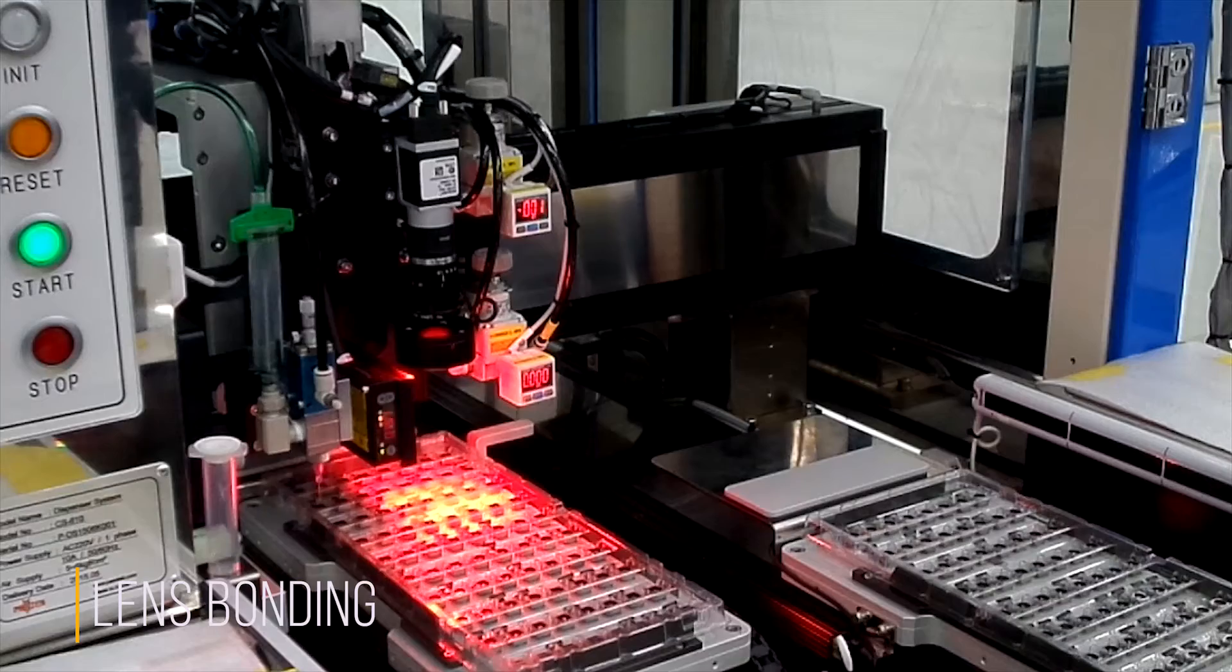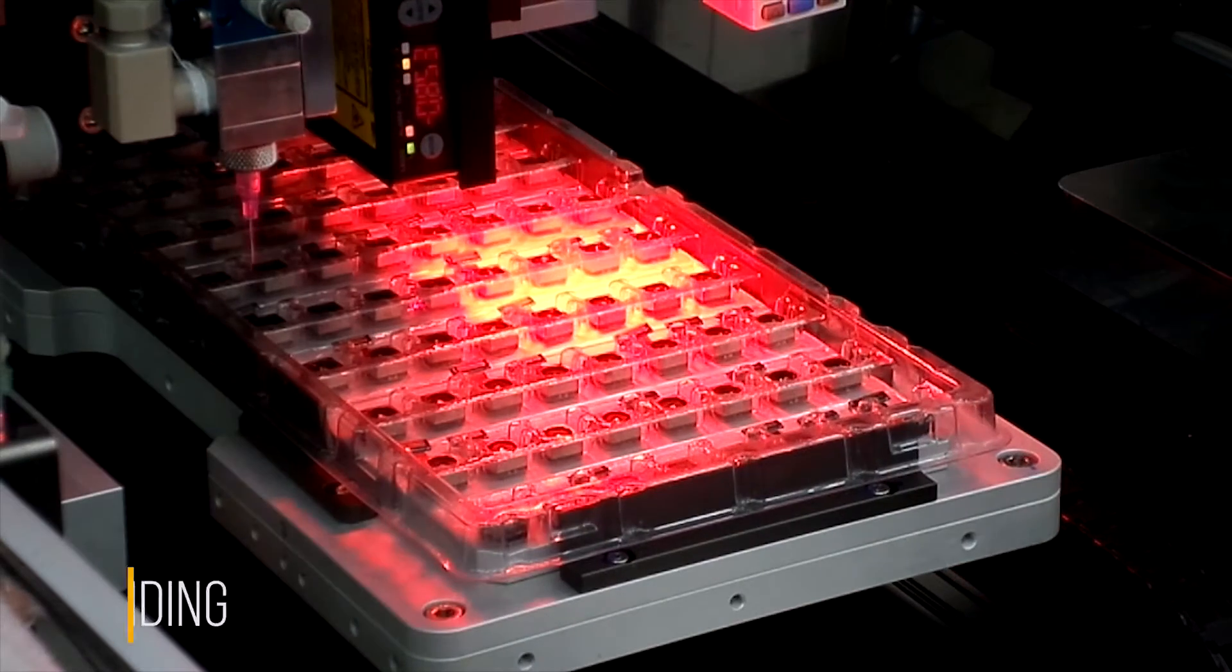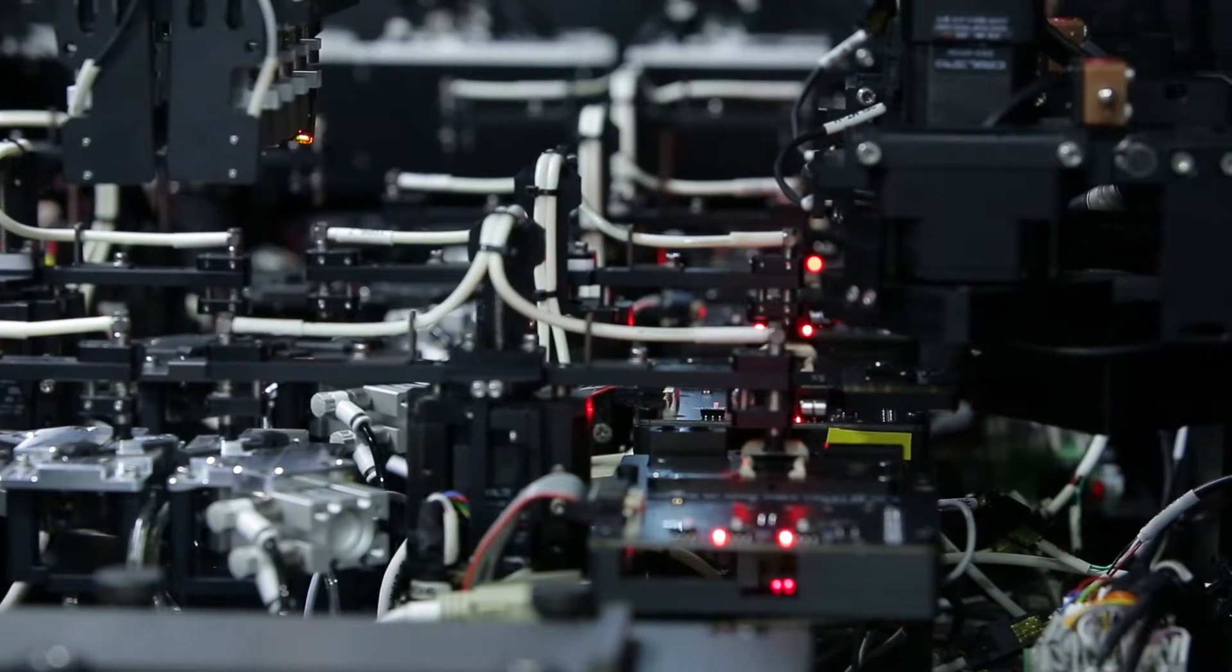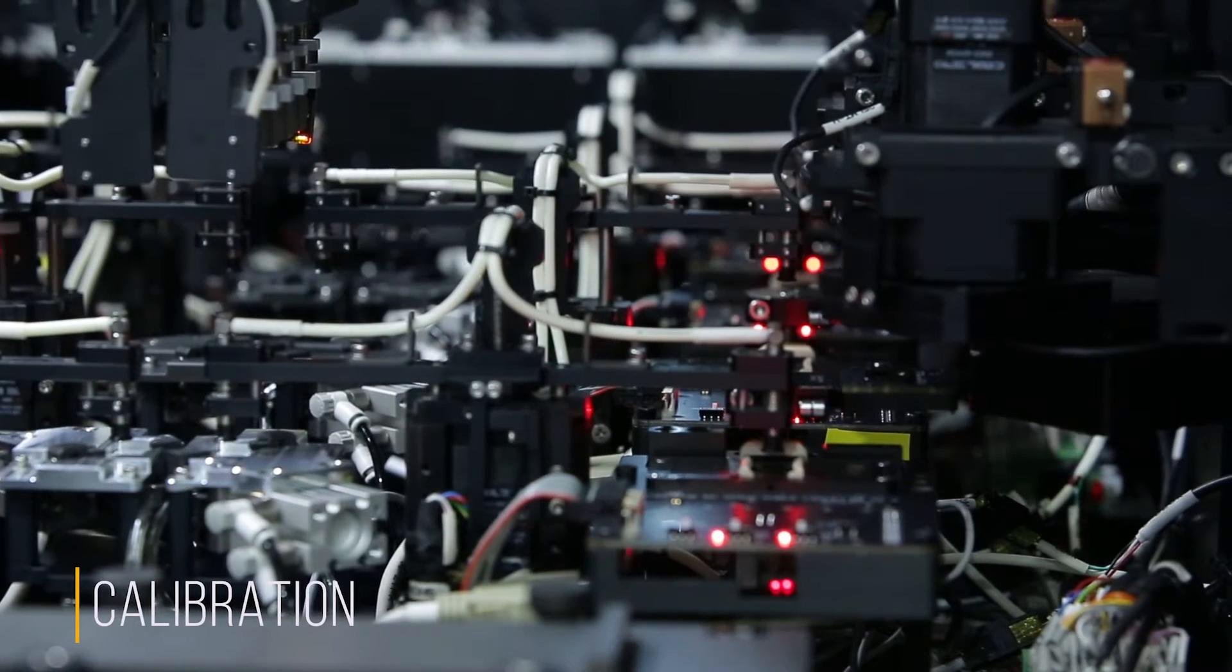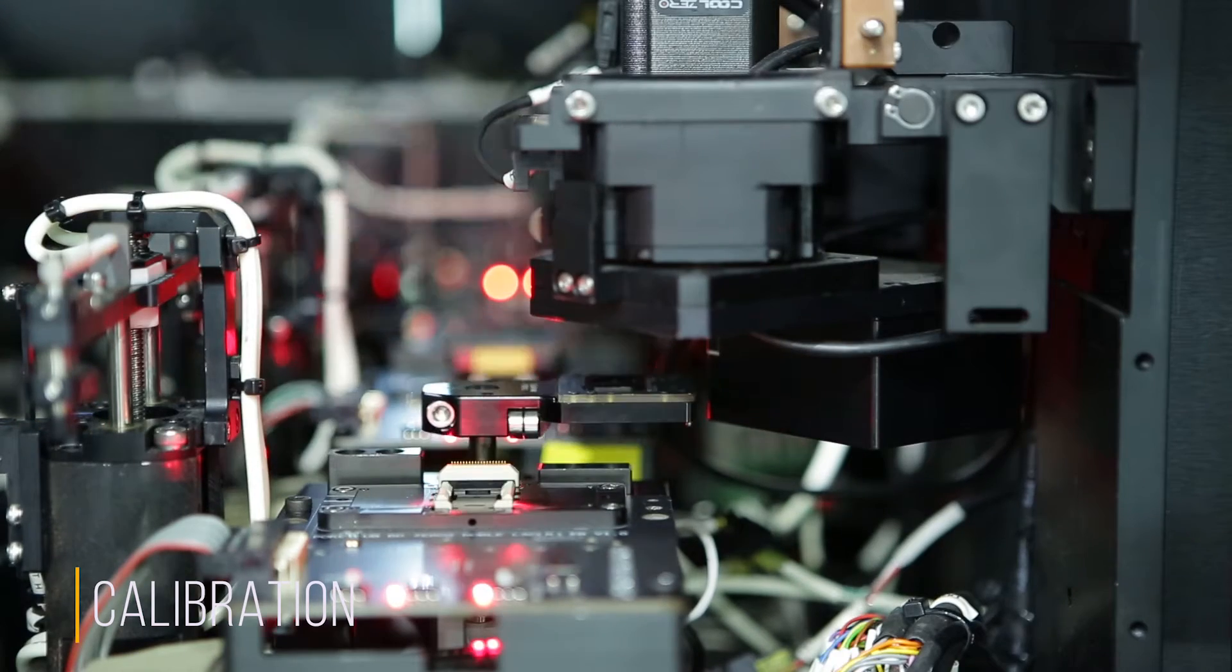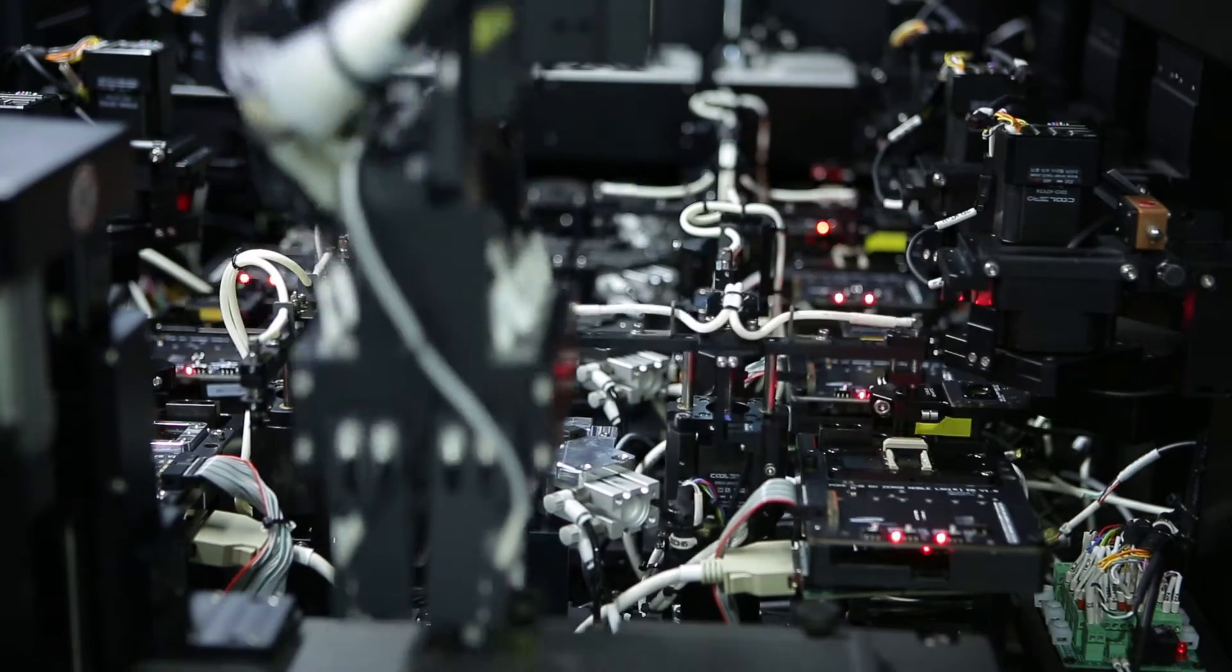After focus adjustment and lens bonding, in which the lens of a high quality module is fixed, calibration is performed. Here the color and shade are compensated using a standard light source. The data correcting the deviation of each lens and sensor are extracted and applied to the sensor to achieve a better image.